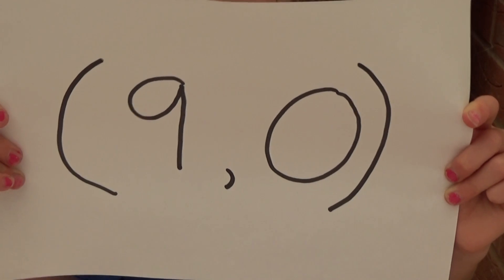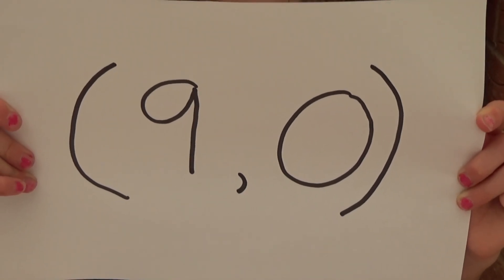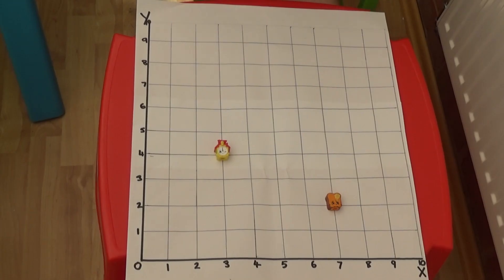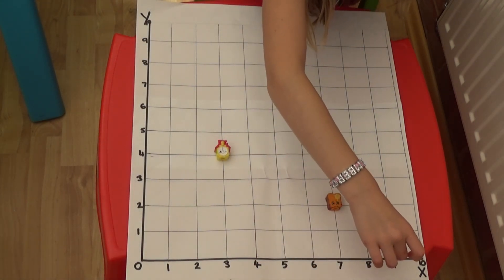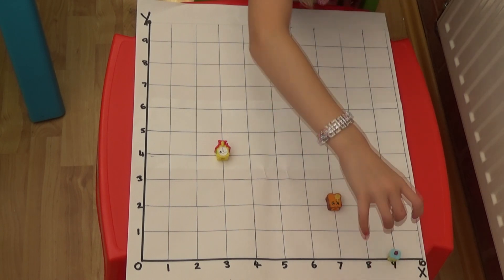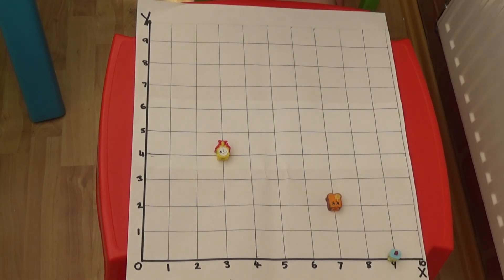This time I have the coordinates and I need to decide where to put my toy. My first coordinates are nine, zero. This means I have to go nine along the x-axis and zero up the y-axis. So this is where I put my toy.